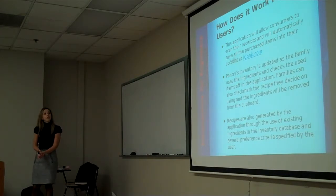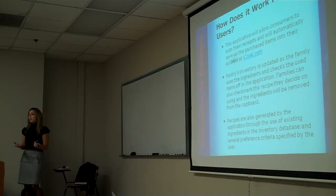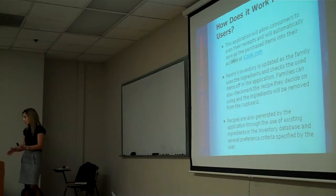The pantry's inventory is updated as soon as the user chooses a recipe from the website, and then whatever ingredients they already have in their pantry for that recipe will automatically be deducted from the inventory list, and whatever missing ingredients they have, a shopping list will be generated for them.